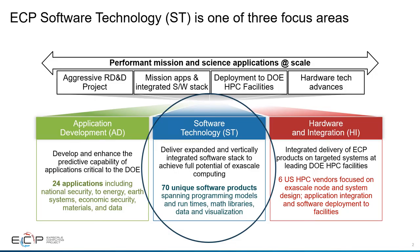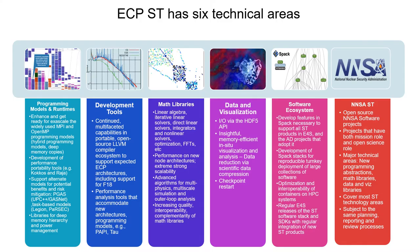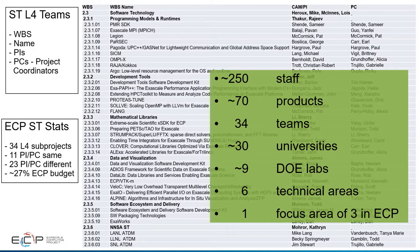ECP Software Technologies is one of three focus areas within the Exascale Project. Within ST, there are six technical areas. Overall, ST has 34 teams that contribute to 70 products for a total of about 250 staff from 30 universities and 9 DOE labs. It's a large project.